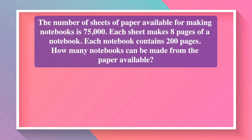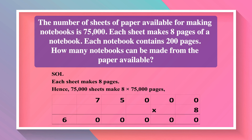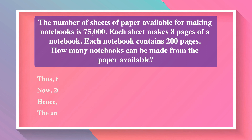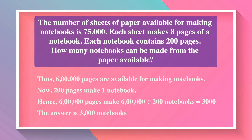The number of sheets of paper available for making notebooks is 75,000. Each sheet has 8 pages of notebook and each notebook contains 200 pages. How many notebooks can be made from the paper available? Each sheet makes 8 pages, so 75,000 sheets will make 8 × 75,000 = 6,00,000 pages. Since 200 pages make 1 notebook, 6,00,000 pages make 6,00,000 ÷ 200 = 3,000 notebooks.